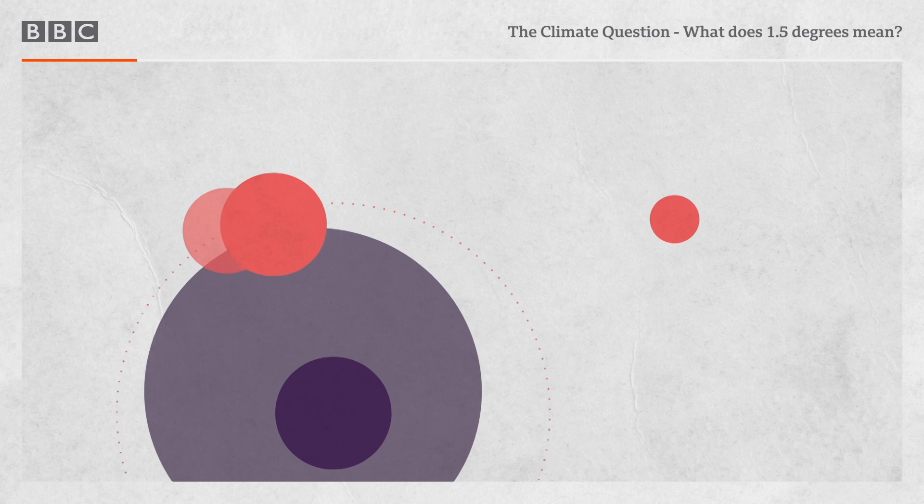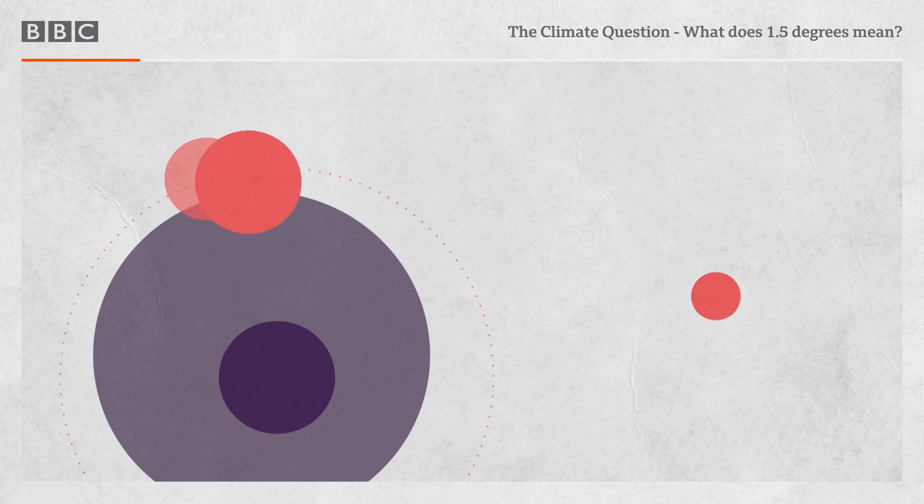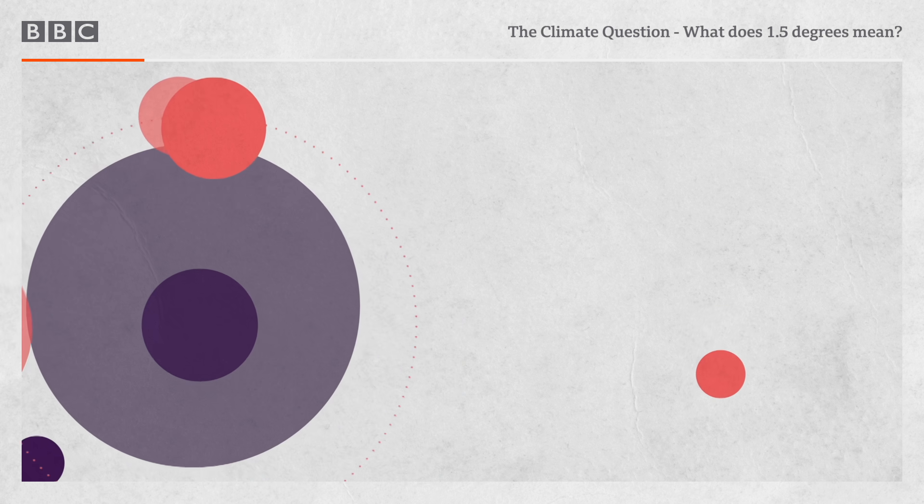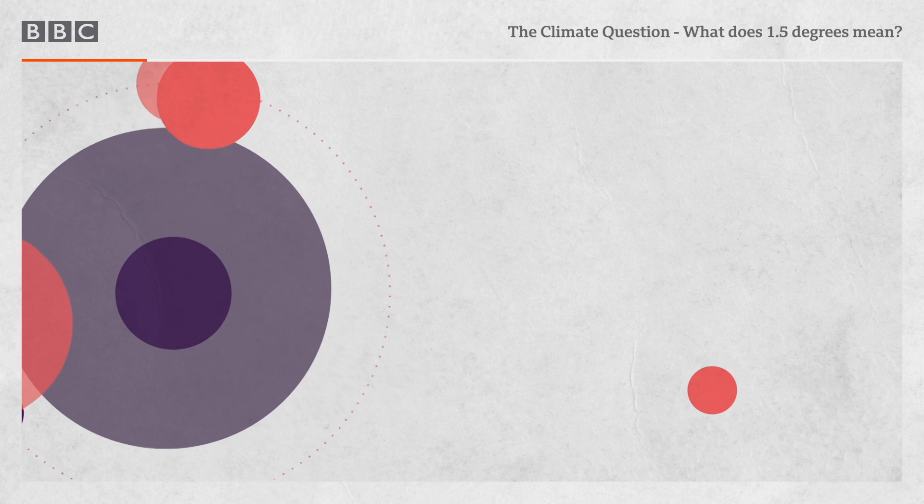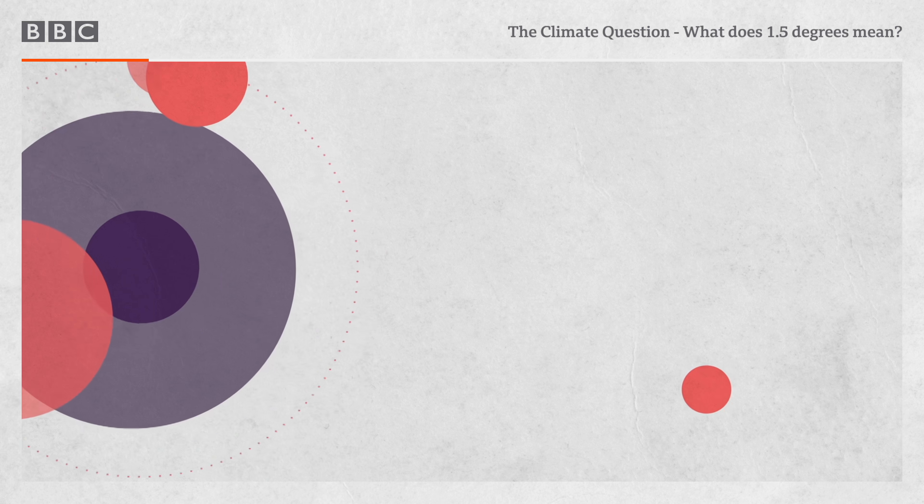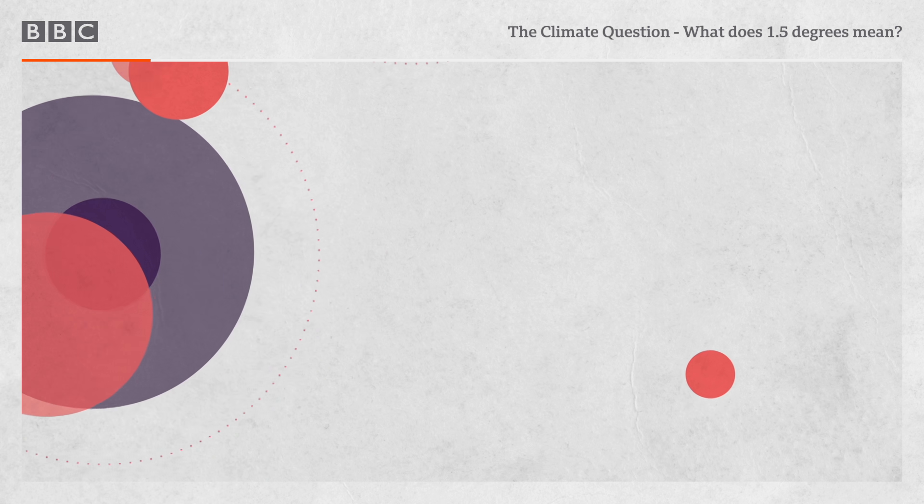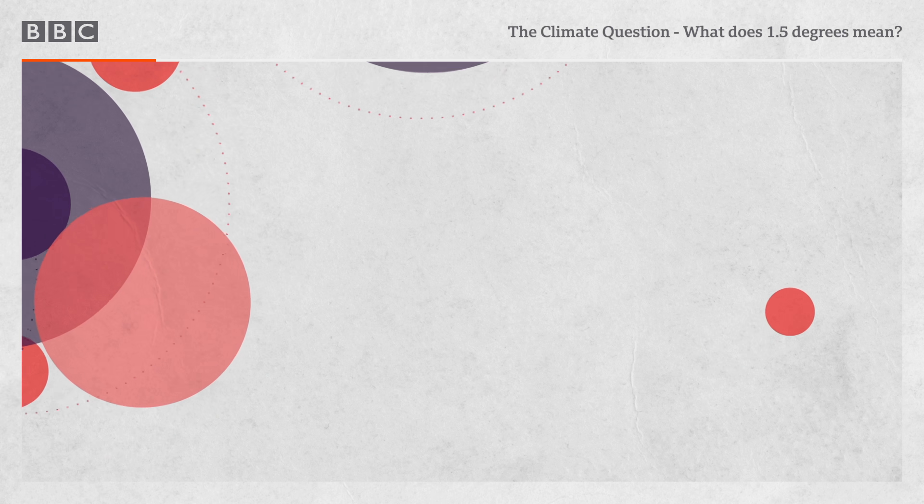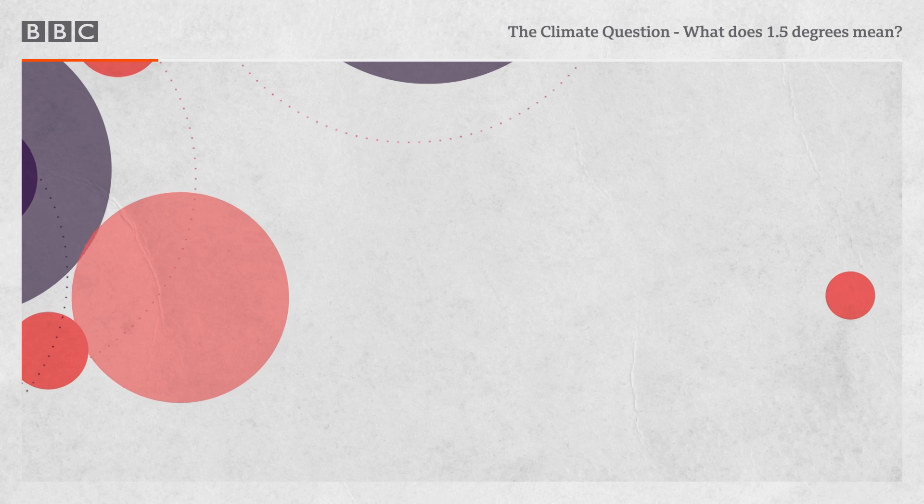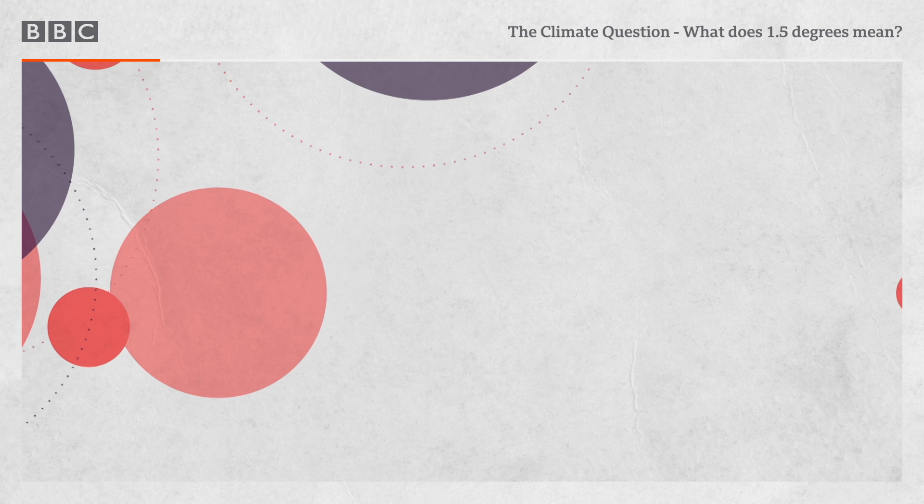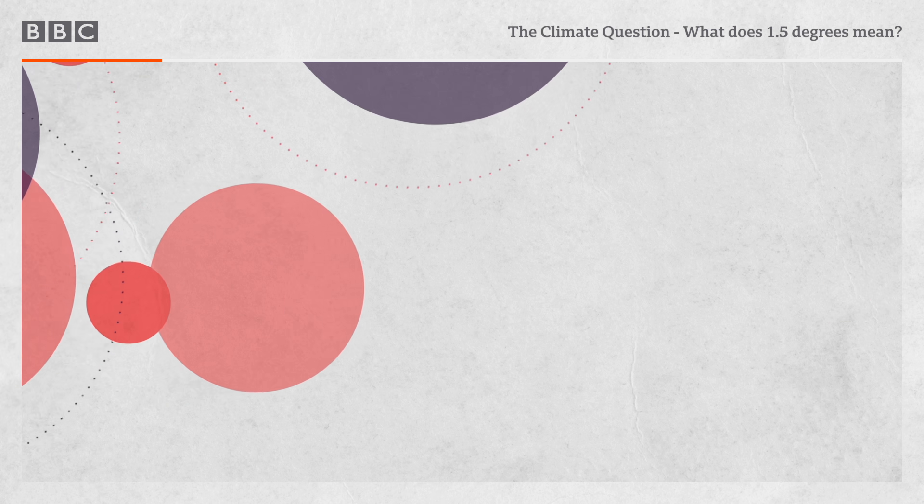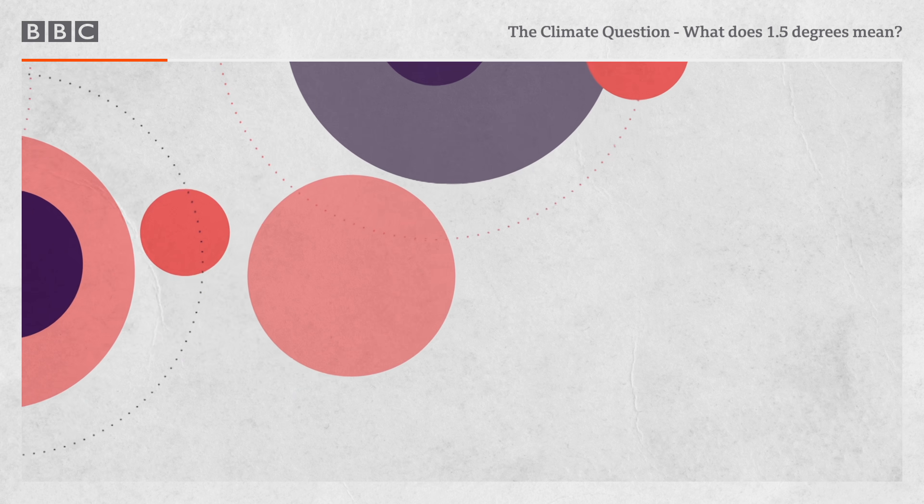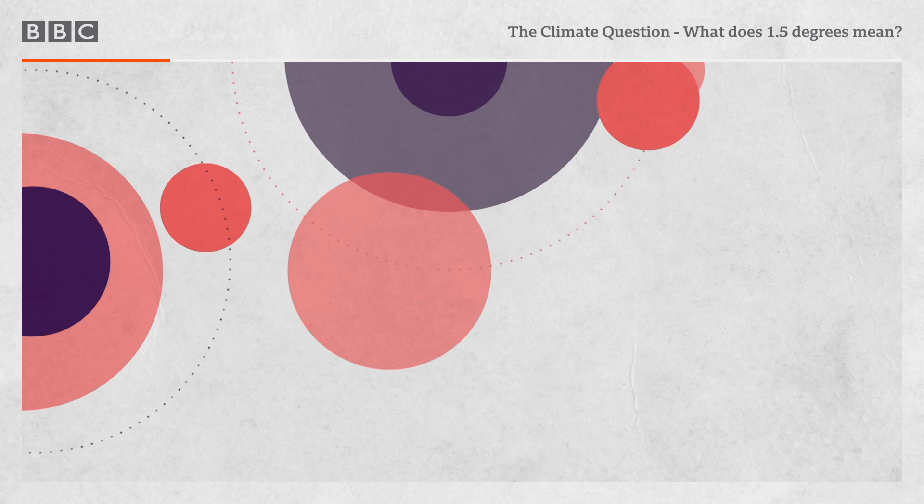Why are people banging on about 1.5 degrees of warming? So 1.5 degrees of warming came into everyone's consciousness as part of the Paris Climate Agreement. It was the more ambitious part of that agreement. It said we should limit global warming to 2 degrees, and if we're really good, let's try and limit global warming to 1.5 degrees. And then scientists, people in policy, people working in climate change really started to look into what limiting global warming to 1.5 degrees would mean.